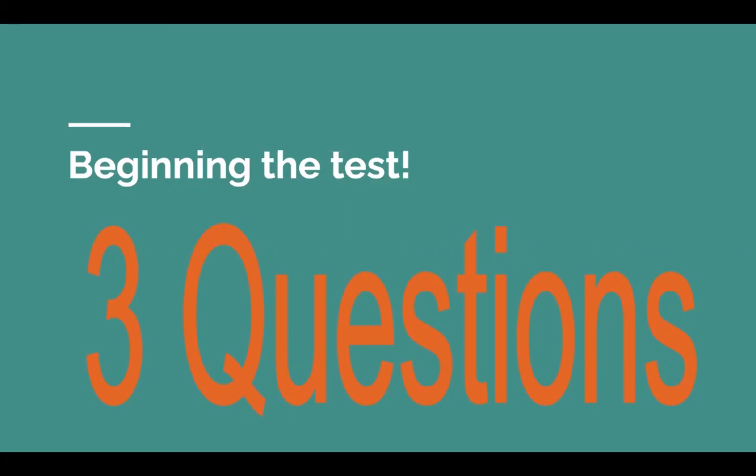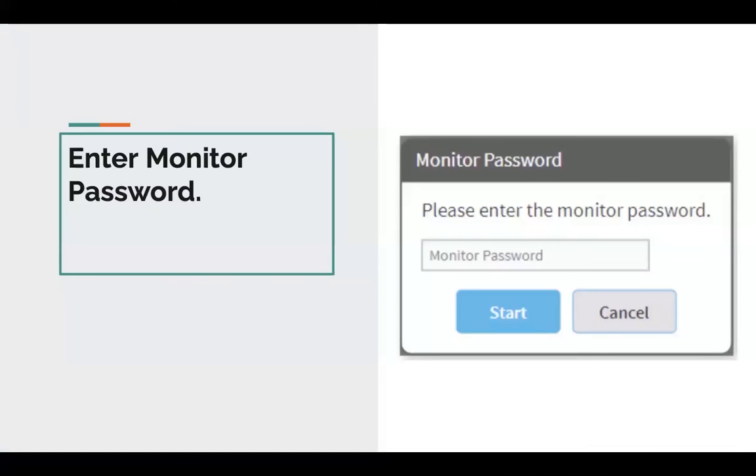If that occurs, let the student's teacher know, and discussions and decisions will be made on how to proceed. After the student answers their three questions correctly, the teacher will inform the class what the monitor password is for the day. Once that password is entered, the student will click the Start button, and the assessment will begin.